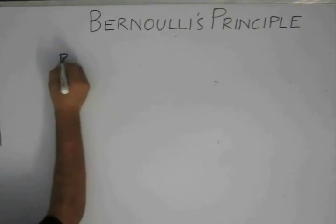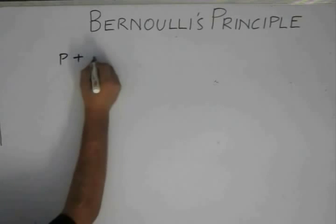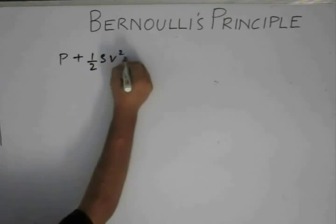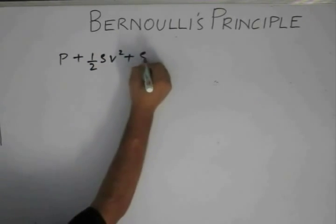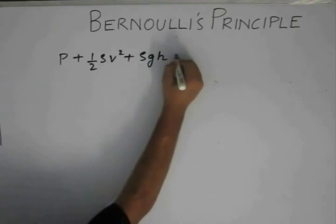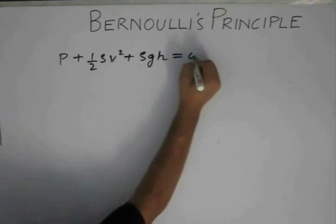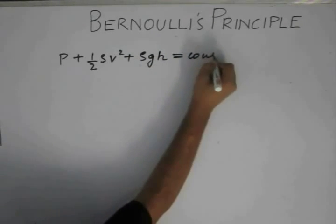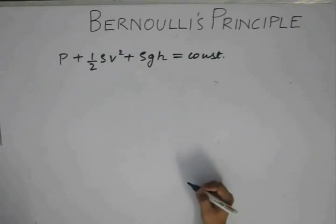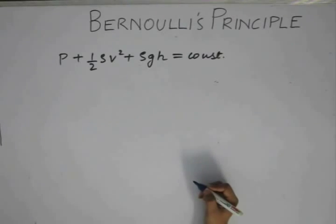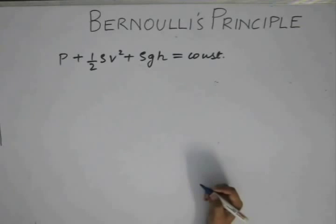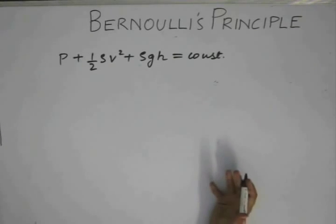Bernoulli's equation is p plus half rho v squared plus rho gh equals constant. Now let us look at something called the concept of efflux velocity.